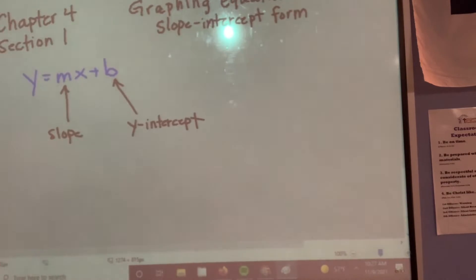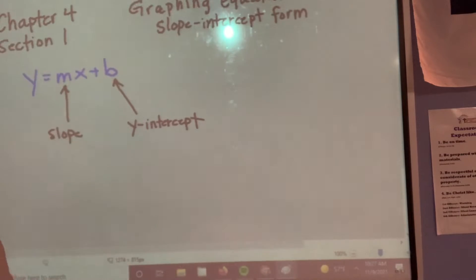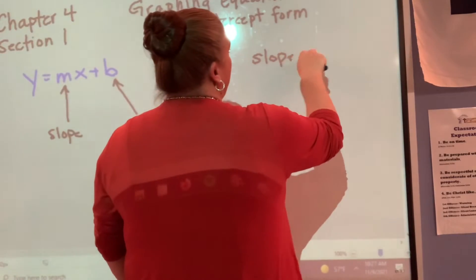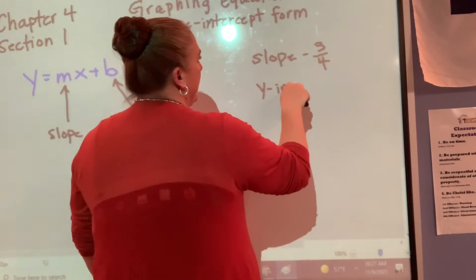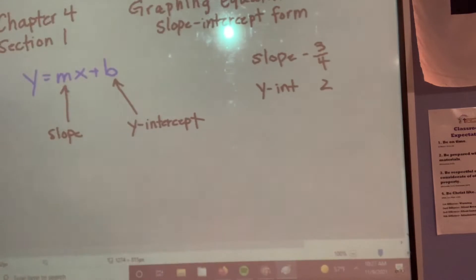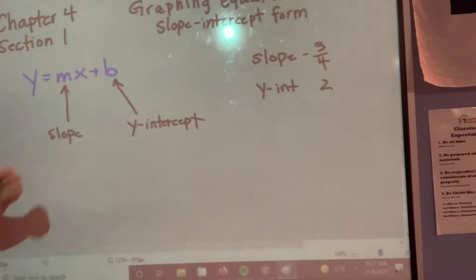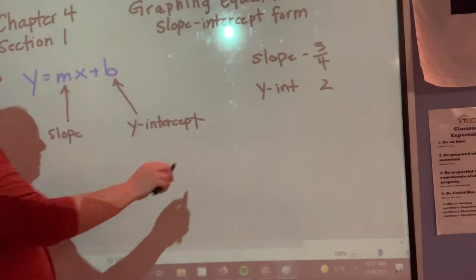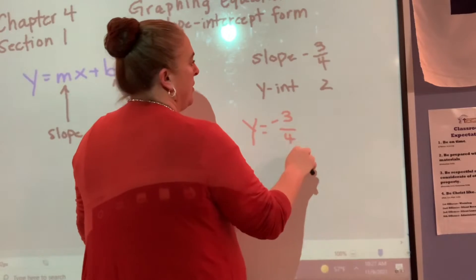Why is it easier to graph something whenever it starts with y equals? You can stick it in your calculator. However, you have to know what it's going to do, and it has to be solved for y. So they're going to start off by saying they want you to write something in slope-intercept form, and they're going to tell you the slope is negative three-fourths and the y-intercept is two. They're giving you the m and the b. How would I write that in slope-intercept form? y equals negative three-fourths x plus two. Perfect.